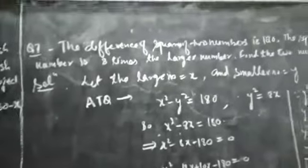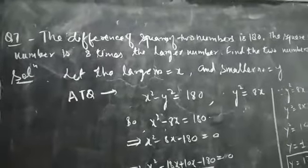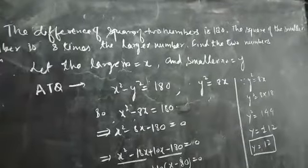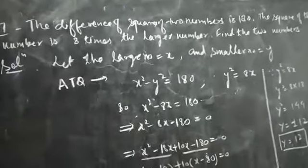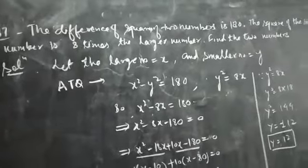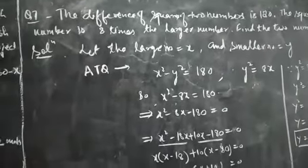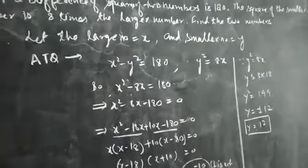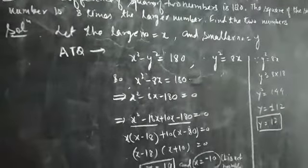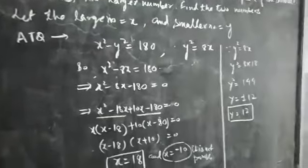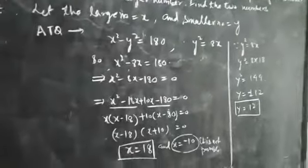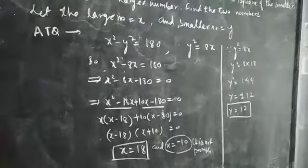See question number 7. The difference of squares of two numbers is 180. The square of the smaller number is 8 times the larger number. Find the two numbers. See the solution. Let the larger number be x and the smaller number be y. According to the question, x squared minus y squared = 180 and y squared = 8x. So x squared minus 8x = 180.